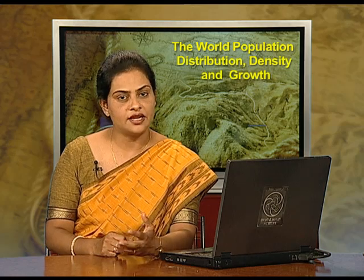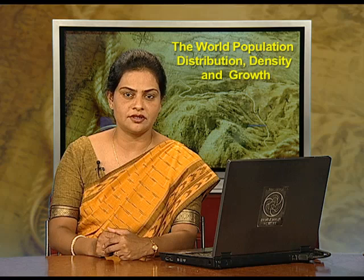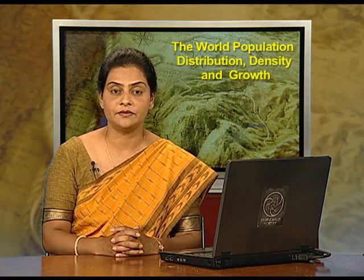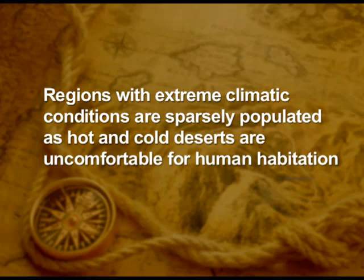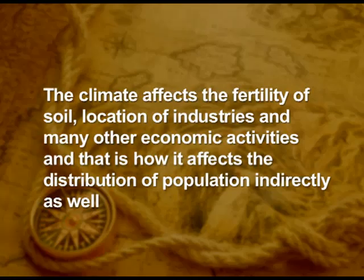Of all the geographical factors, climatic conditions are perhaps the most important. It influences population distribution directly and also indirectly. Regions with extreme climatic conditions are sparsely populated, as hot and cold deserts are uncomfortable for human habitation — for example, northern Norway, Sweden, northern Canada and northern expanse of Siberia. With less seasonal variations, more population is attracted, and Mediterranean regions are densely populated. Climate also affects the fertility of soil, location of industries and many other economic activities, influencing population distribution indirectly.